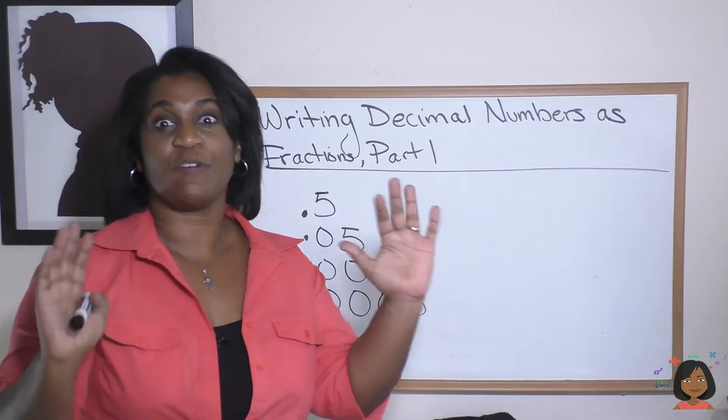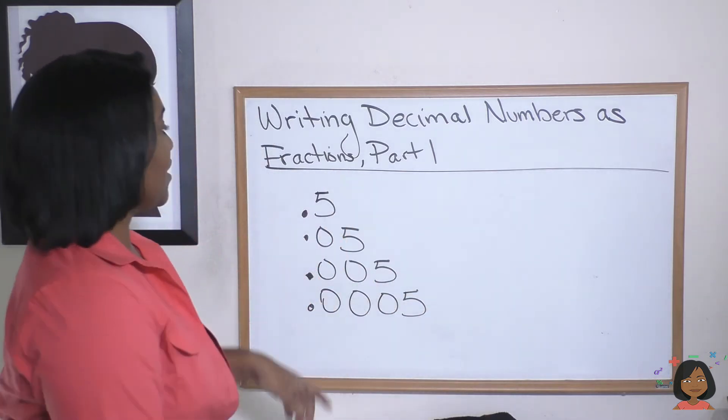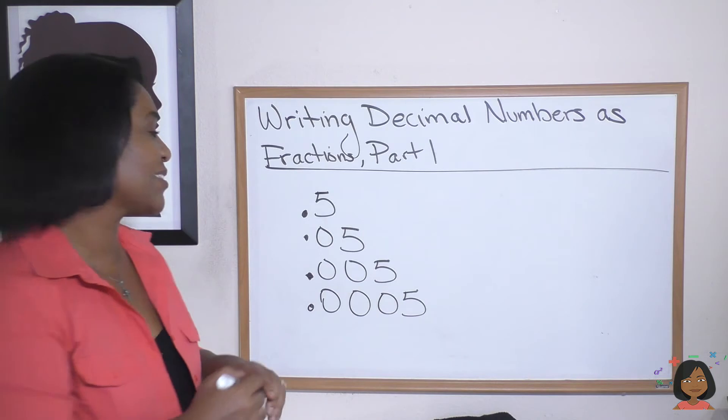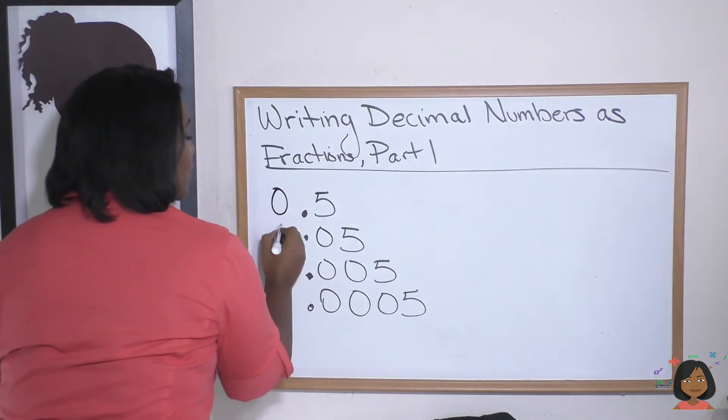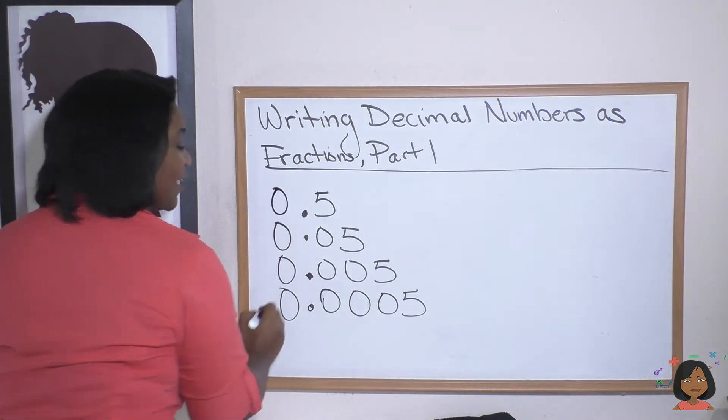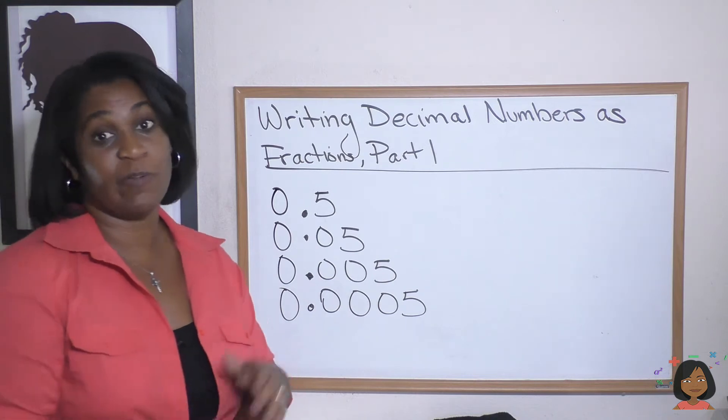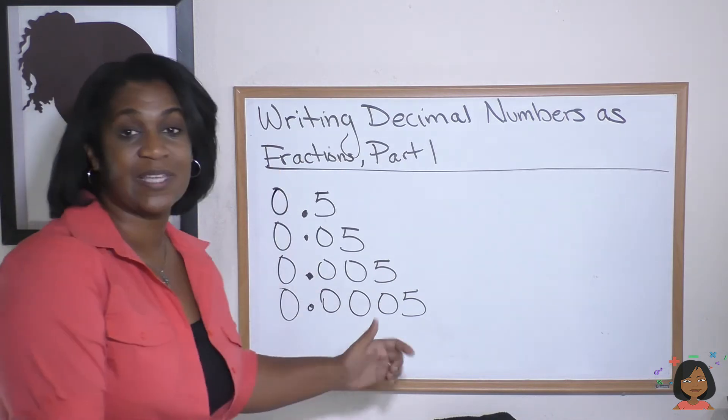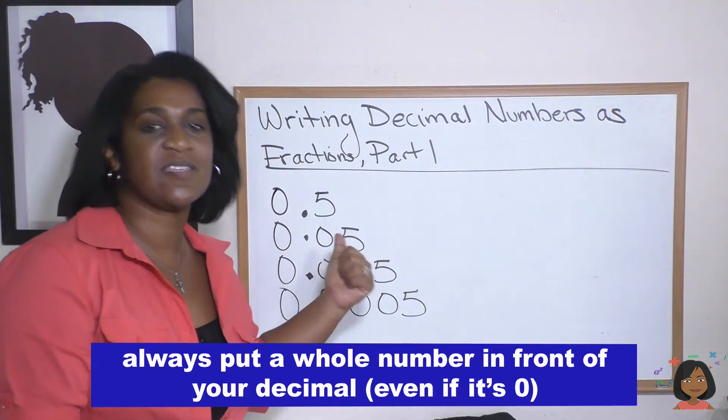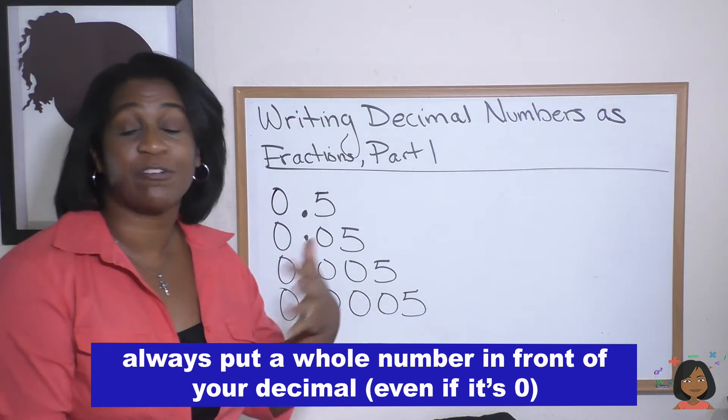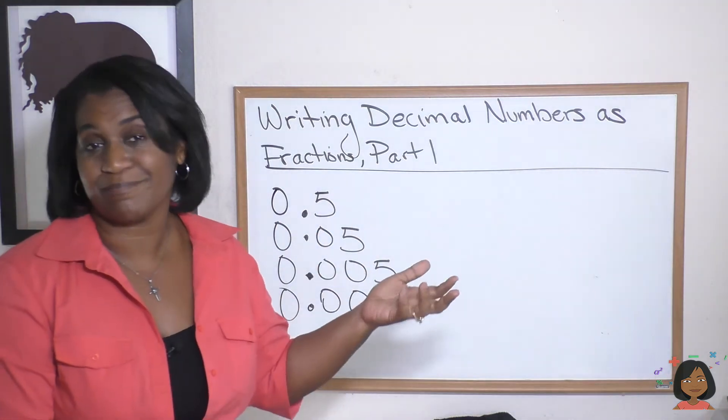Writing decimals as fractions is crazy easy. Take a look. I've written some numbers up here for you, some decimal numbers, and I'm gonna put the zeros in front. That's one of the things when we write our decimals - we make sure there's always at least a zero in front of the decimal point if there isn't another whole number.